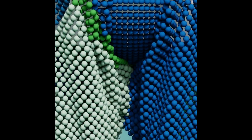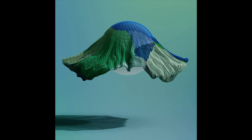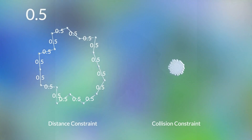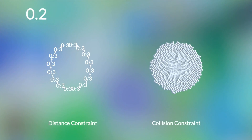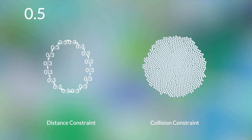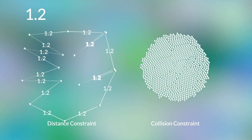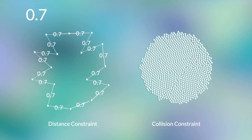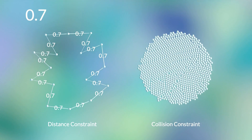Today we'll be covering how to create a cloth simulation in geometry nodes using Blender 3.6. Just like strings, the core of the cloth simulation are the distance and collision constraints. The distance constraint pushes neighboring particles towards or away from each other to maintain a predefined distance between neighbors, and the collision constraint moves colliding particles away from each other.